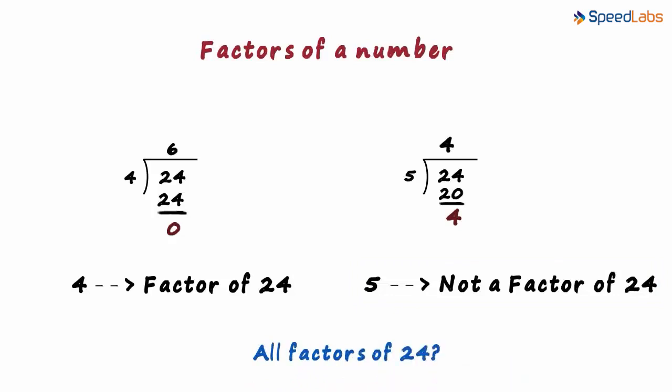We cannot try dividing 24 by all numbers and see if we get the remainder as 0. There is another way in which we can find the factors of a number. We see that in the next video.